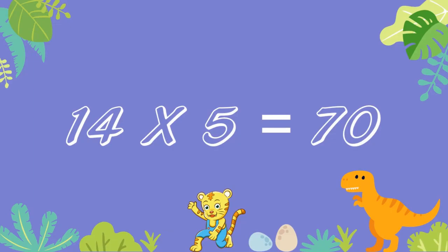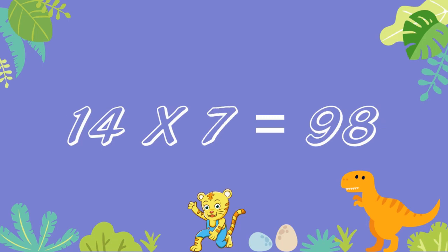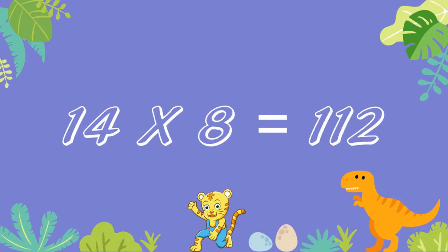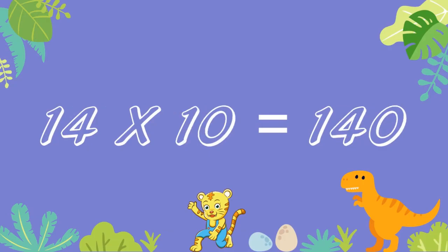14 sixes are 84. 14 sevens are 98. 14 eights are 112. 14 nines are 126. 14 tens are 140.